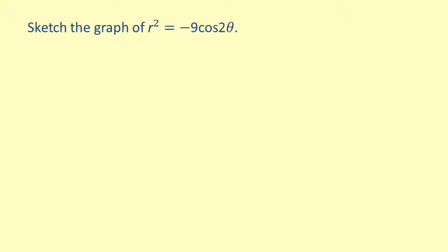Let's begin by finding the zeros. So we set the right side of the equation equal to 0 and solve for theta. We can divide both sides by negative 9, which leaves cosine of 2 theta on the right. Then we take the inverse cosine of both sides. That gives us the inverse cosine of 0 equals 2 theta. The inverse cosine of 0 is pi over 2.